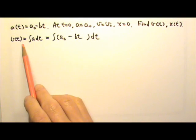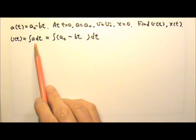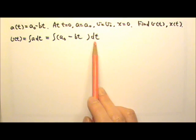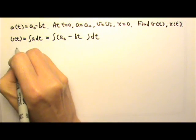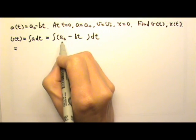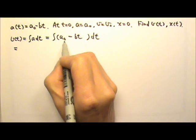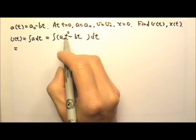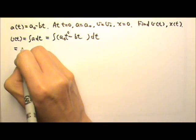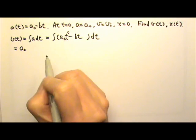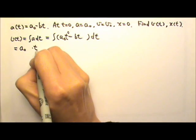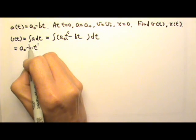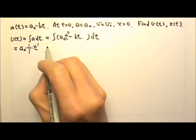To find the velocity as a function of time, we compute the integral of a dt, which means integrating a0 minus bt. We do this one term at a time. The first term is the constant a0, which is really a0 times t to the 0, since t to the 0 is 1. The constant coefficient a0 stays, and when we integrate t to the 0, we gain one degree of power and get t to the first, multiplied by 1 over 1.